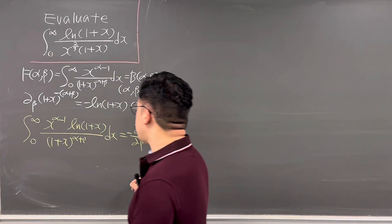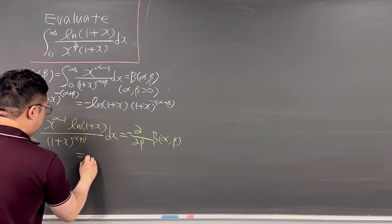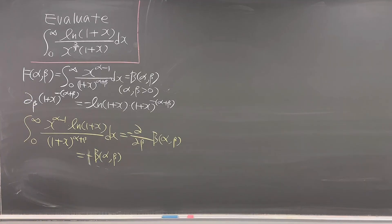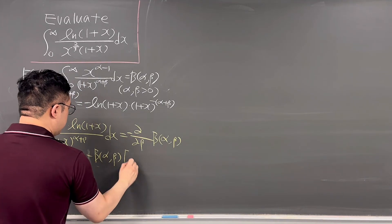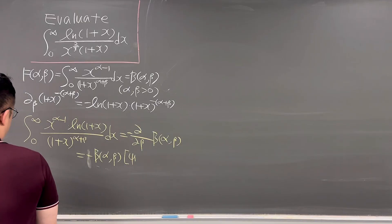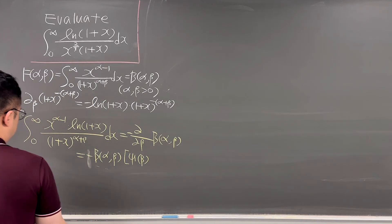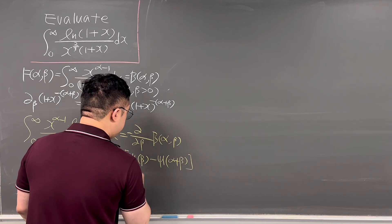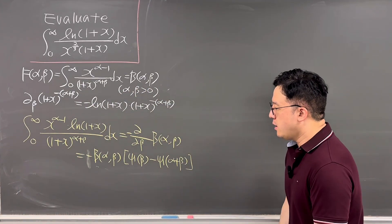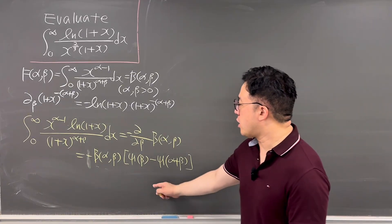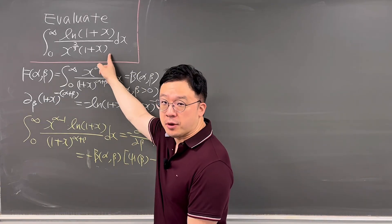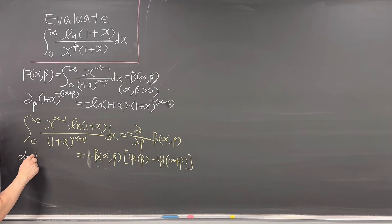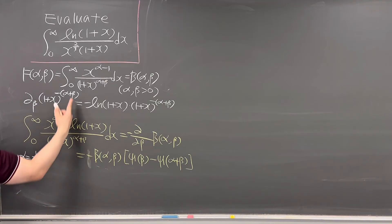This derivative equals negative B(α, β) times [ψ(β) − ψ(α + β)], where ψ is the digamma function. We choose α = 1/3 and β = 2/3 to match our integral.